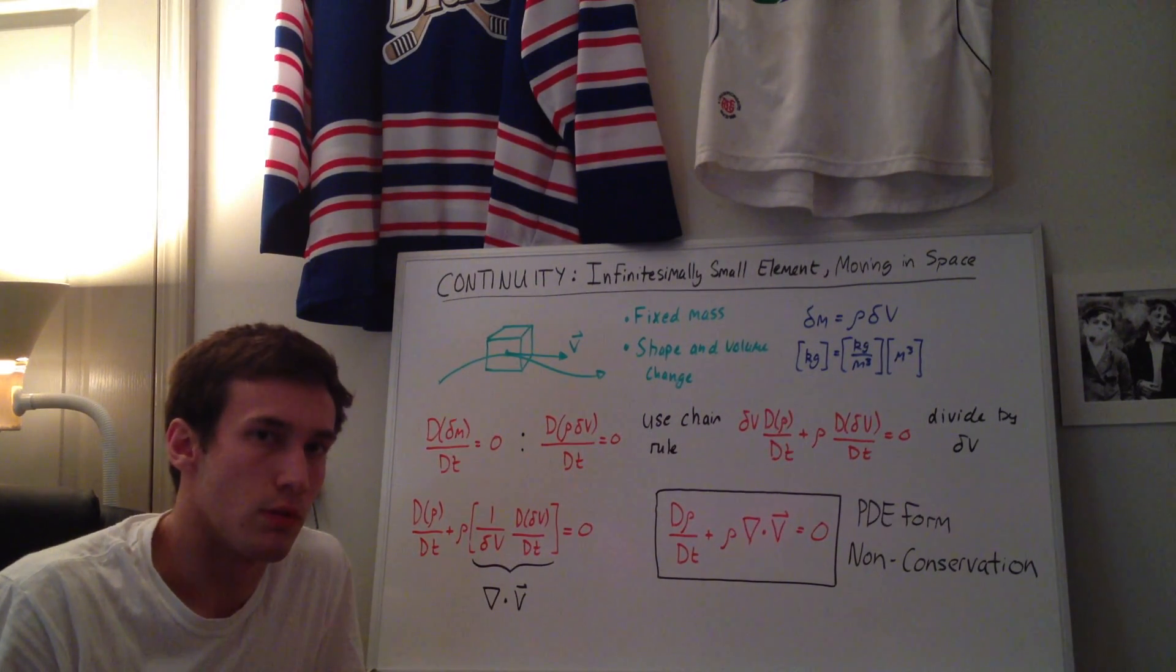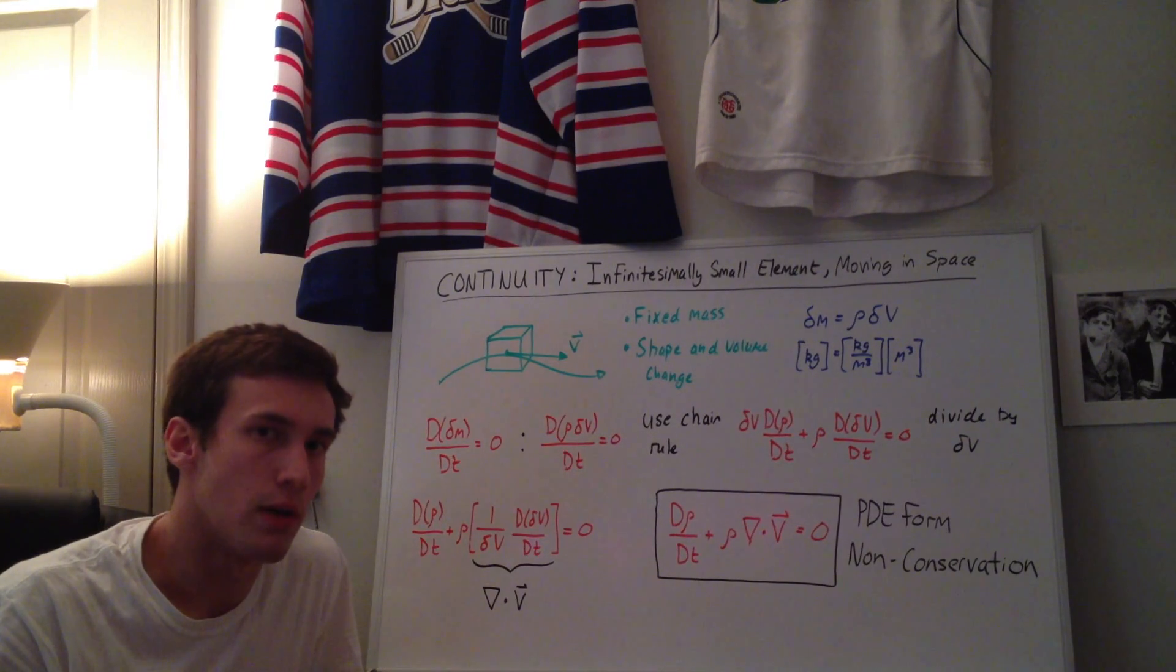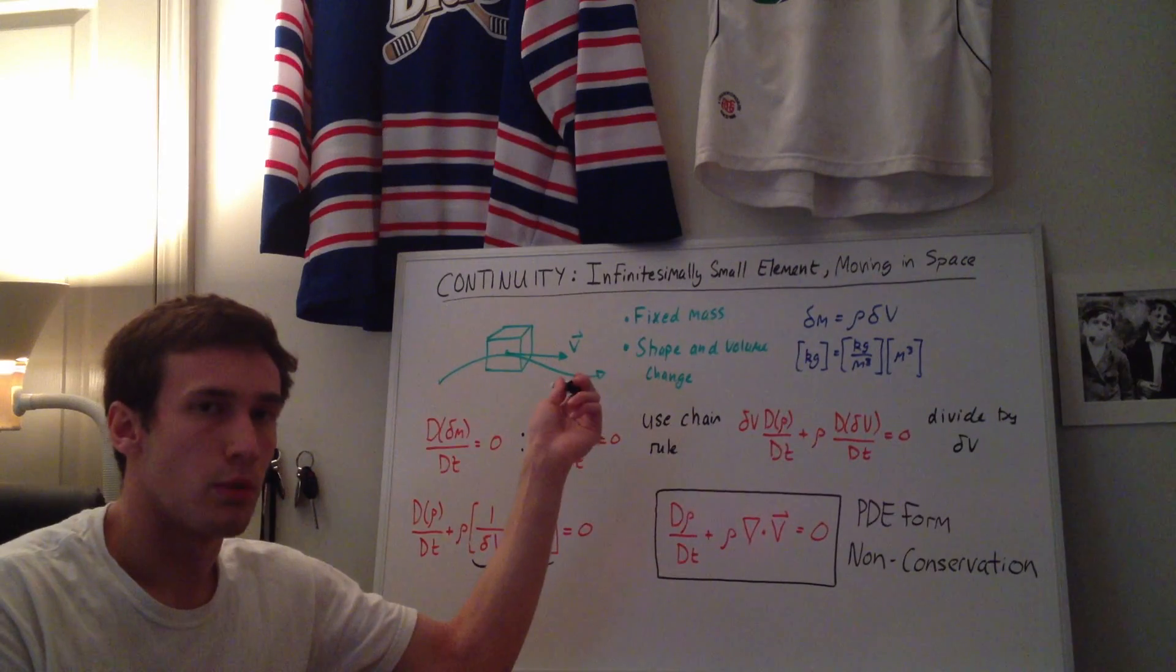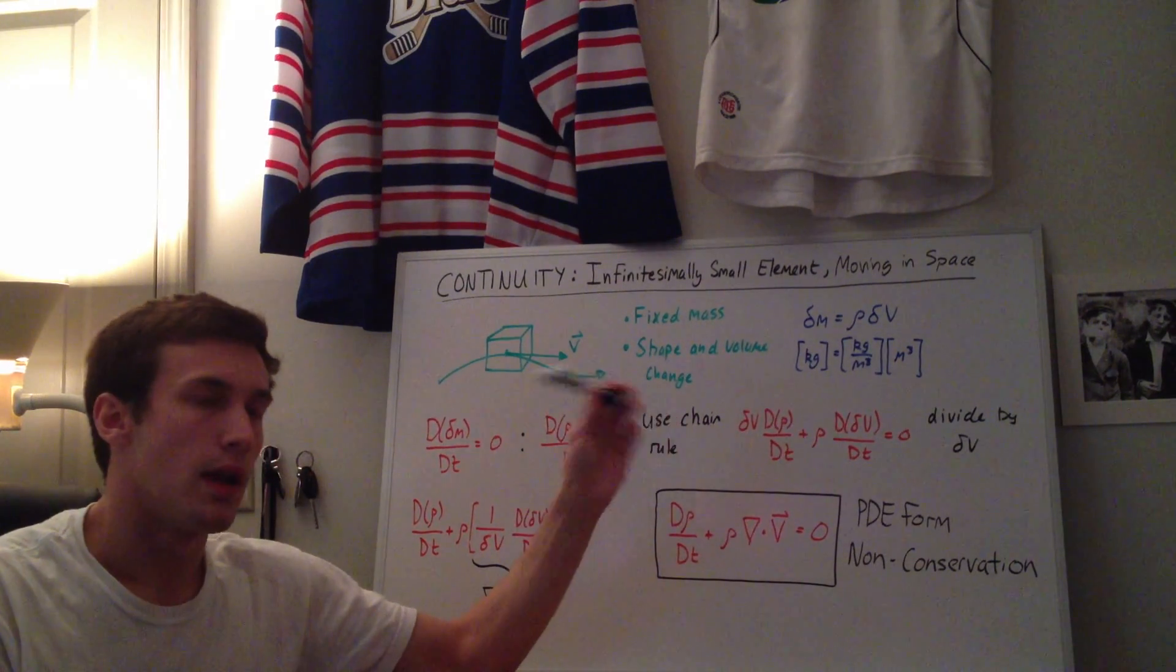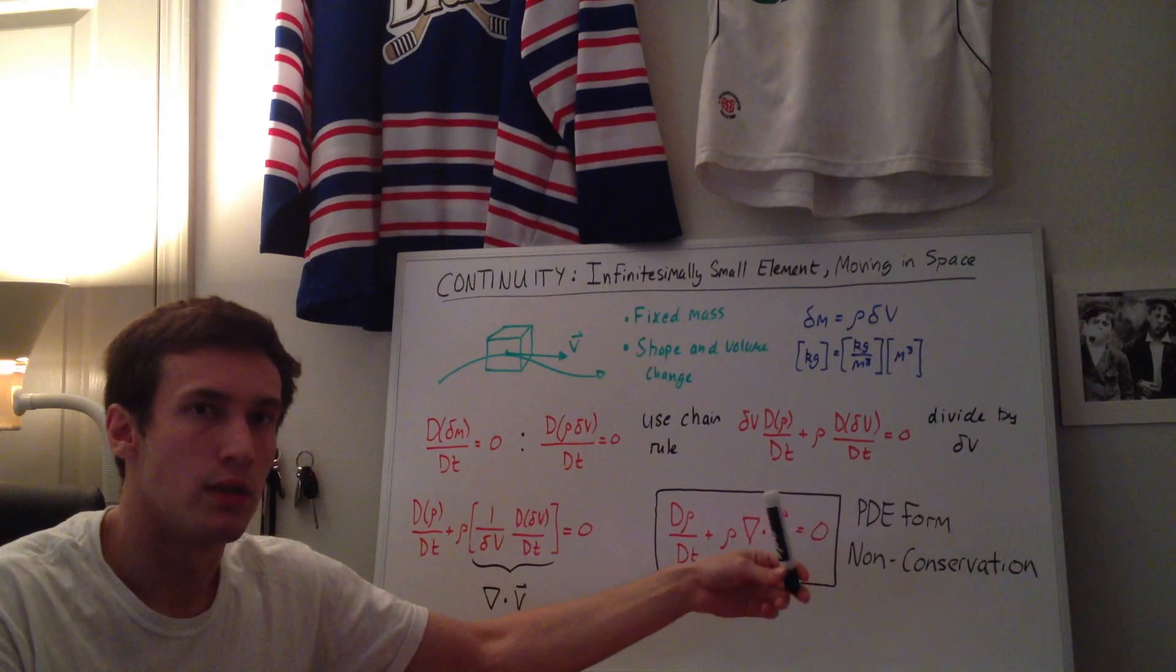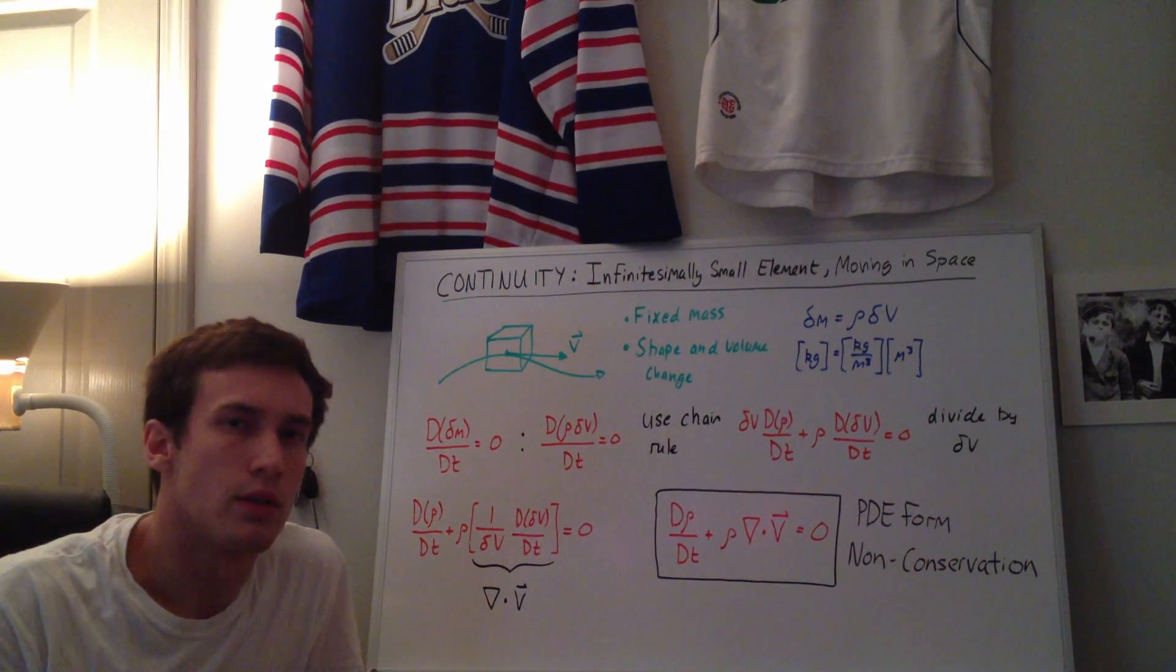So I'm also going to go over the derivations of the continuity equation in the three other flow models that I talked about, and we'll see how you can get the conservation form by using the infinitesimally small fluid element fixed in space. And then the other two will give us integral form for conservation and non-conservation form, as I'm pretty sure I discussed in my flow models video.